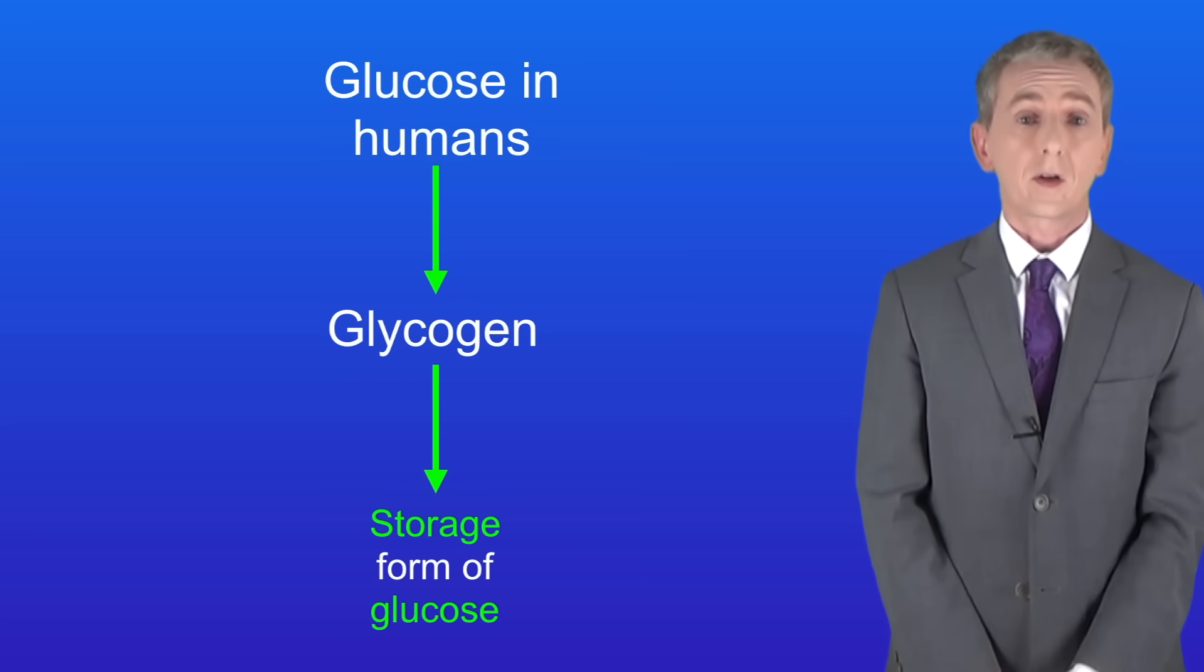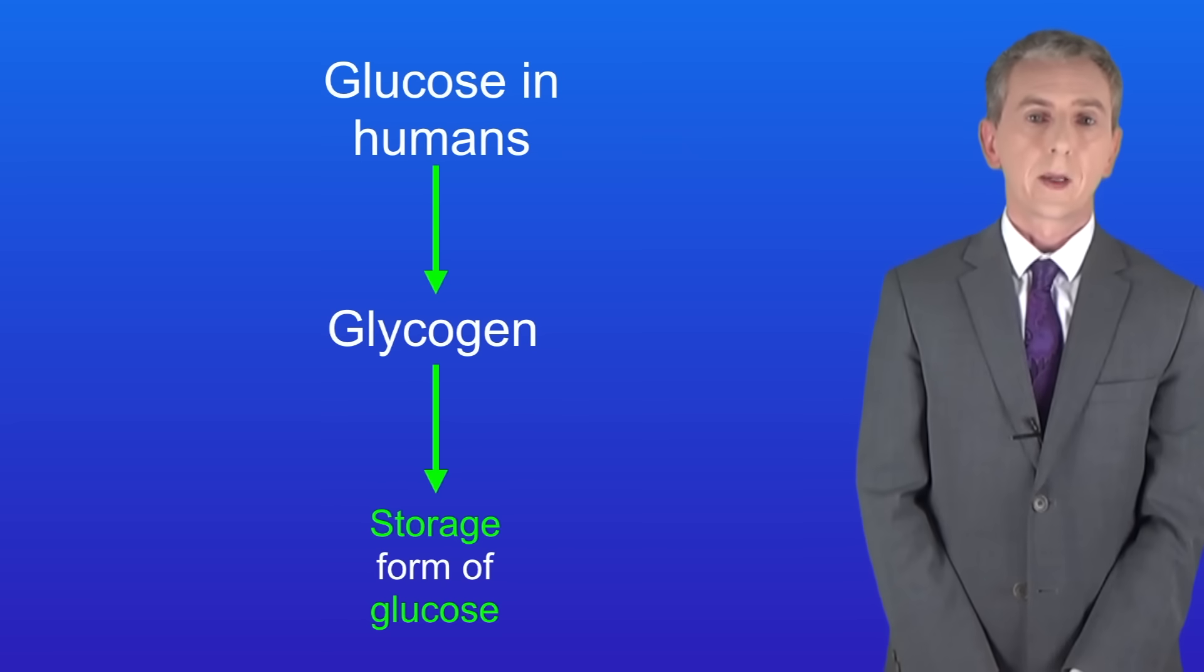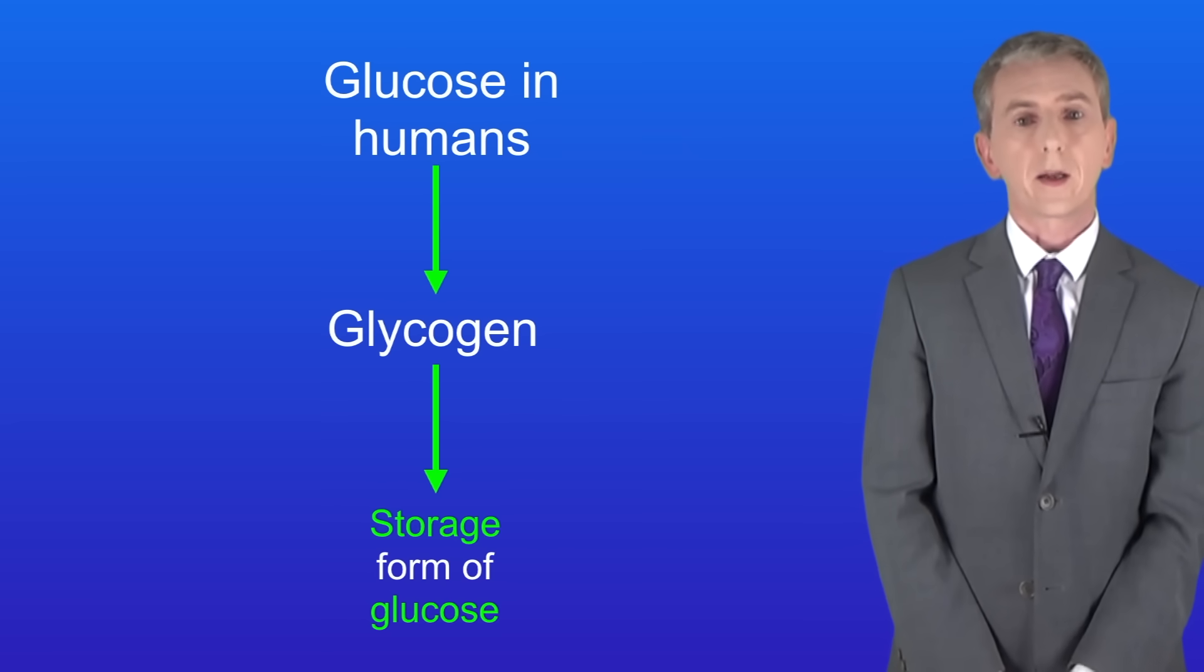Now in humans and other animals glucose is converted to the molecule glycogen. Glycogen is a storage form of glucose and we're going to look at glycogen again in a later video.